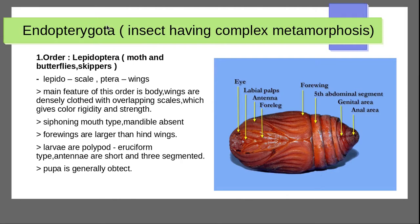Let's start another lecture. Indo-Exopterygota — order Lepidoptera — moths and butterflies. Lepidoptera is moths or butterflies; 'lepido' means scale, 'ptera' means wings. The main feature of this order is that the body and wings are densely clothed with overlapping scales which give color, rigidity, and strength.